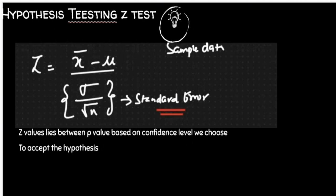The z-score formula is: x-bar (your point) minus the mean, divided by the standard deviation. We divide by the standard deviation because we want to scale everything onto one particular scale — the scale of standard deviations.